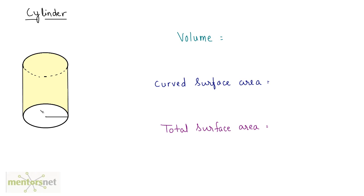This is our cylinder. If you look at it from the bottom, you will see that it is a circle. Let us say that this circle has radius r. The length of the cylinder — basically it is a pipe — the height of the cylinder, I can call it h.